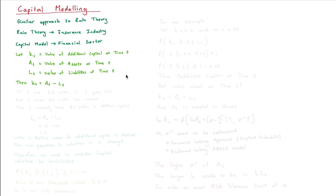Let's have a quick example. If I owe $10 million in one year's time and I invest $12 million into stocks, then I currently have $2 million in additional capital. We can see we have a positive amount of additional capital. This is desired. We would be worried if that capital was negative because that means we wouldn't be able to meet our obligations when they fall due.